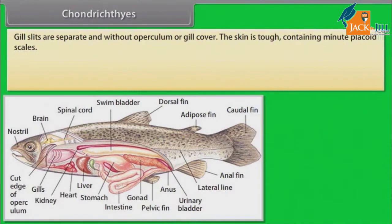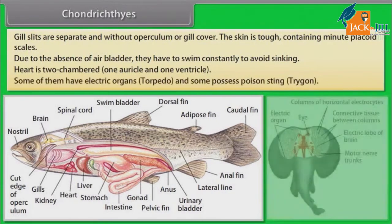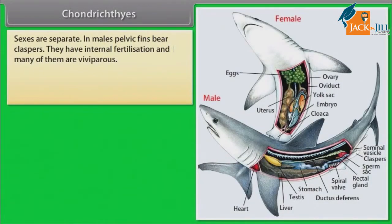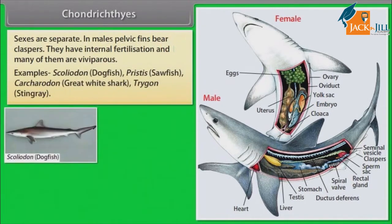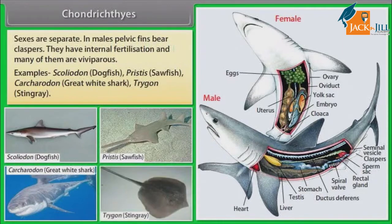Gill slits are separate and without operculum or gill cover. Their skin is tough, containing minute placoid scales. Due to the absence of air bladder, they have to swim constantly to avoid sinking. Heart is two-chambered. Examples: Carcharodon (Great white shark), Trygon (Stingray).